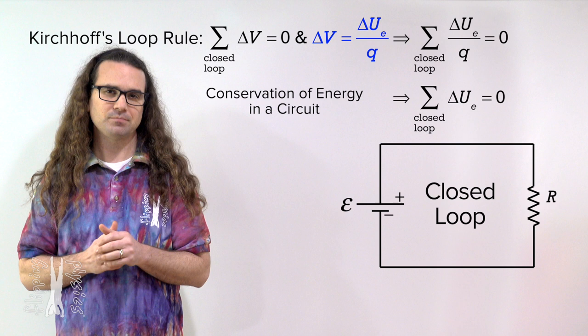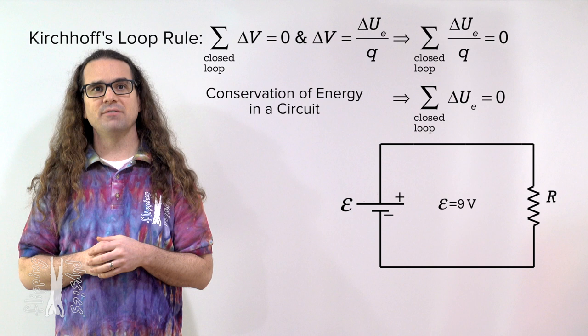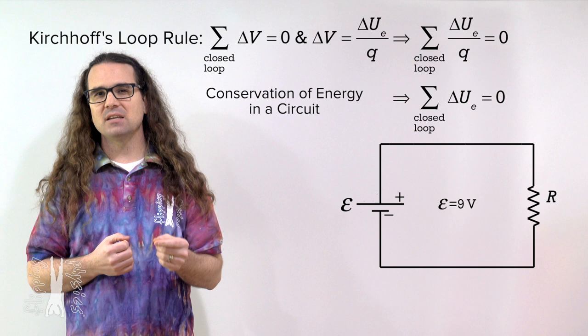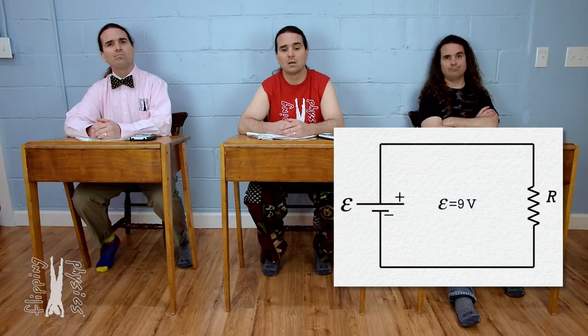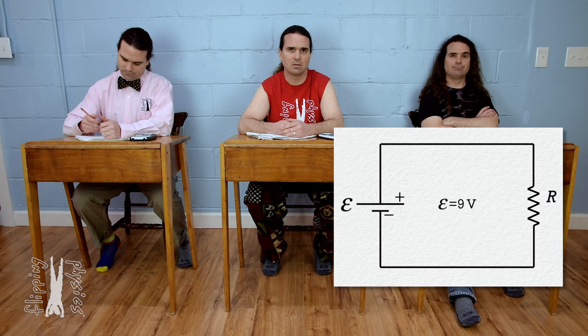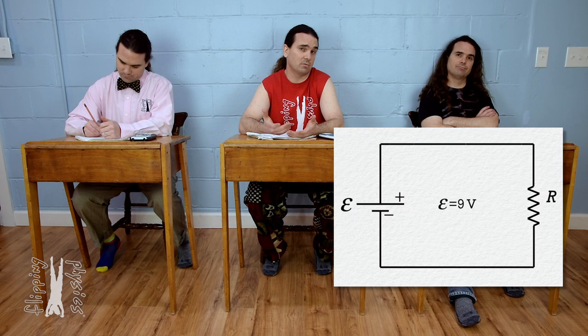Let's say we have a 9 volt battery. That means the electric potential difference across the battery equals 9 volts. As we go from the negative to the positive terminals of the battery, will the electric potential stay the same, go up, or go down? Going from negative to positive means the electric potential will increase, so it goes up.